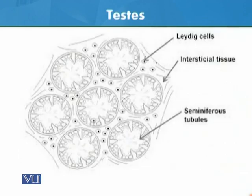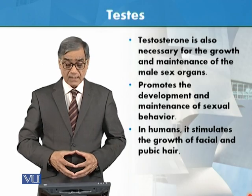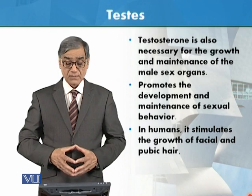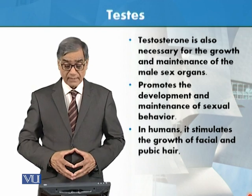This cross-section is also a diagram. The Leydig cells, present in the interstitial tissue, are the cells that produce hormones. There are also seminiferous tubules and Sertoli cells which nourish the sperm. These cells produce testosterone, which goes directly into the blood because it is a hormone.